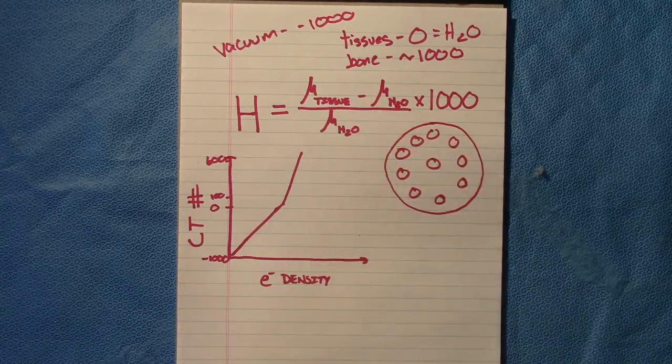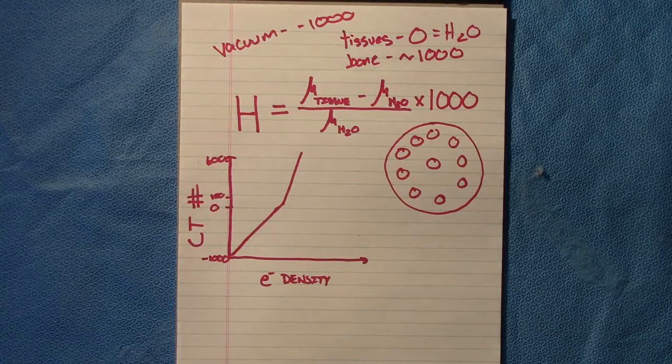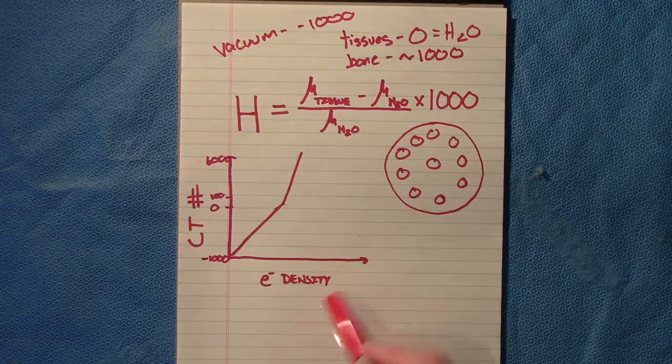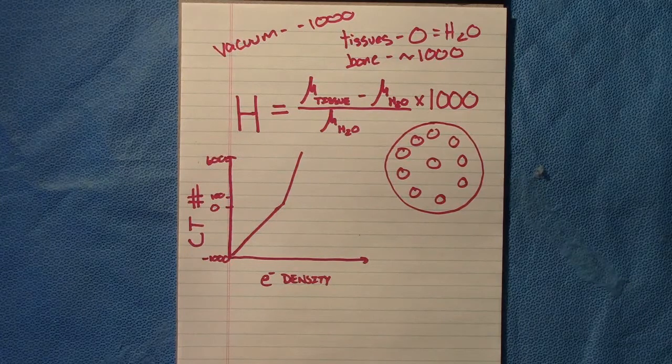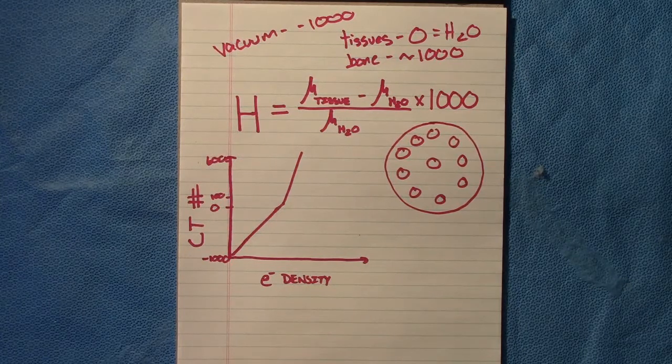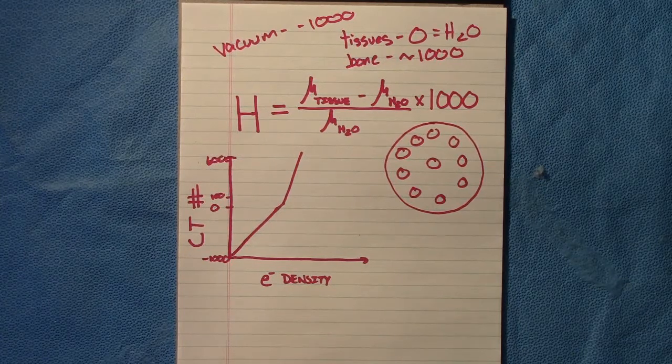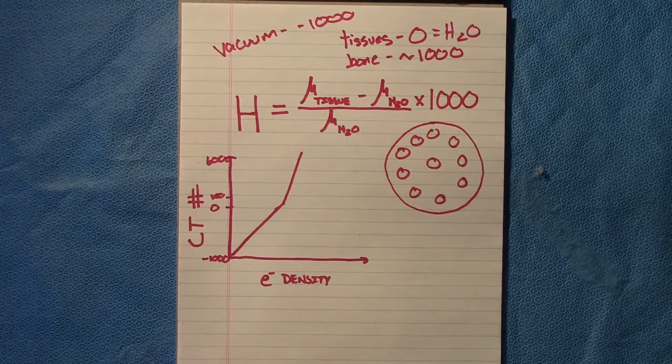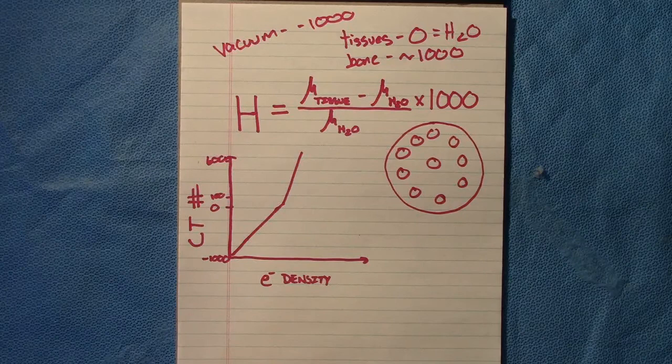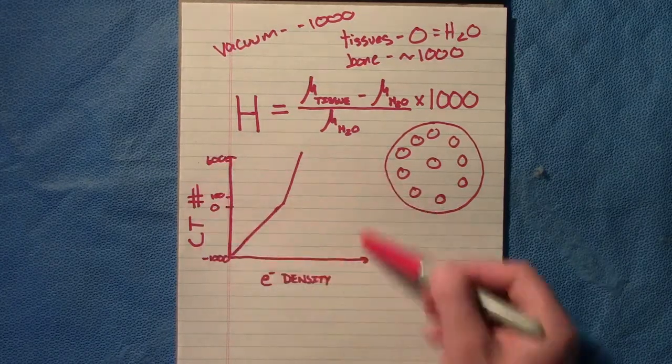You have now this curve, you have your electron densities and your CT numbers. So the reason we care so much about the electron density is that the Compton interactions, which are the primary interaction for radiotherapy dose in the MV range, is related to the electron density.